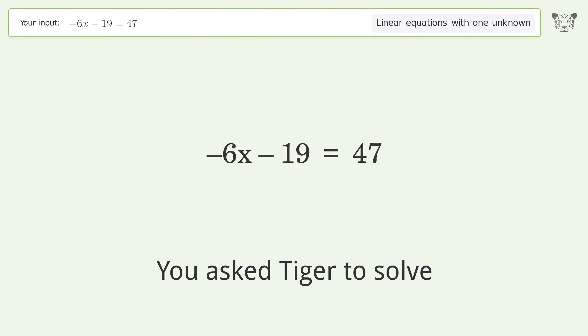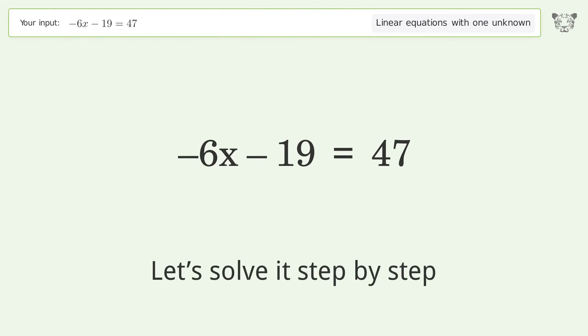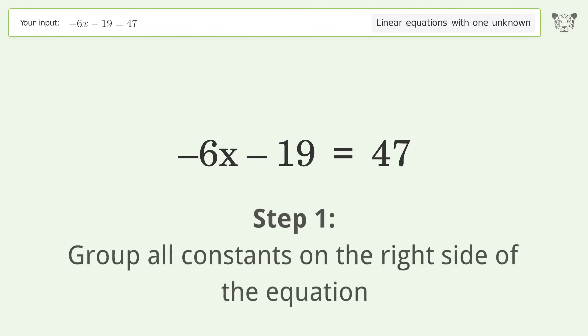You asked to solve this linear equation with one unknown. The final result is x equals negative 11. Let's solve it step by step. Group all constants on the right side of the equation. Add 19 to both sides and simplify the arithmetic.